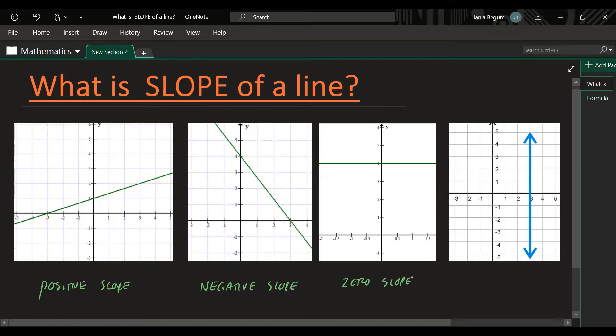And the last one, it's a vertical line. So this line has an undefined slope, or we can say no slope. This would be an undefined slope.